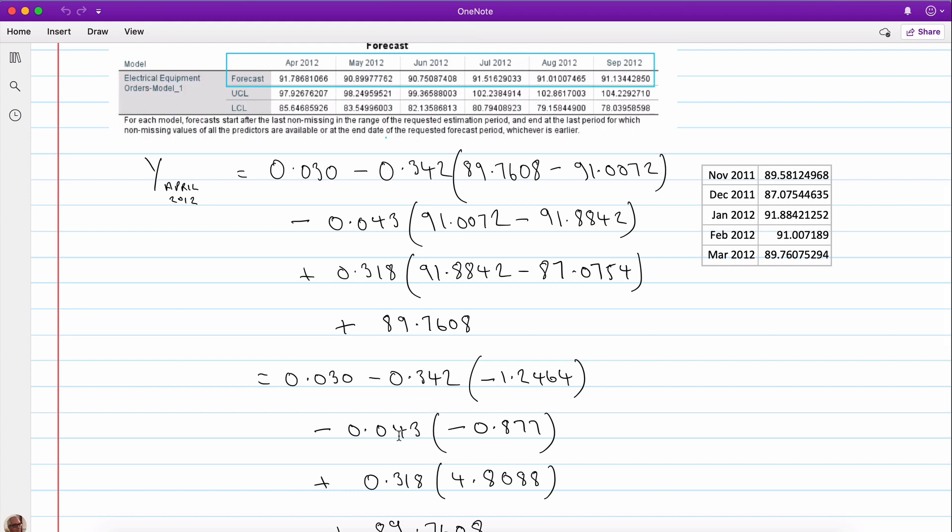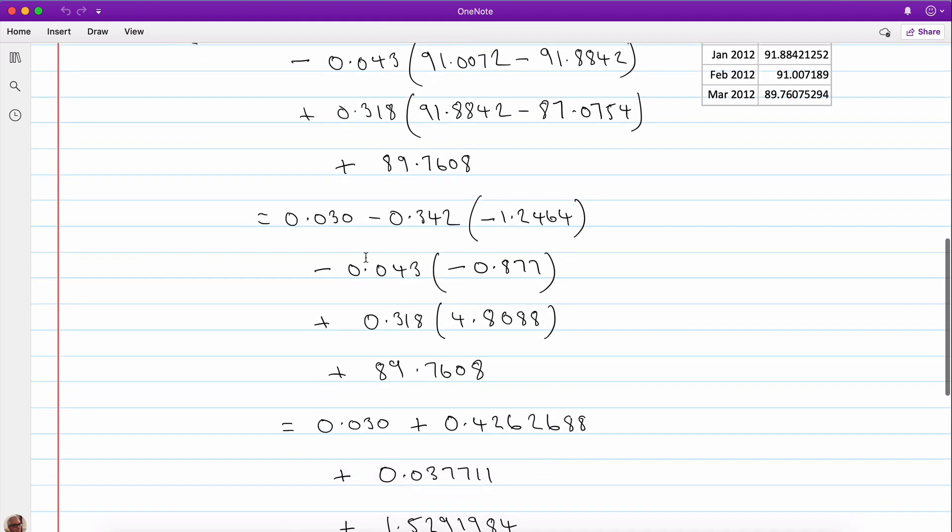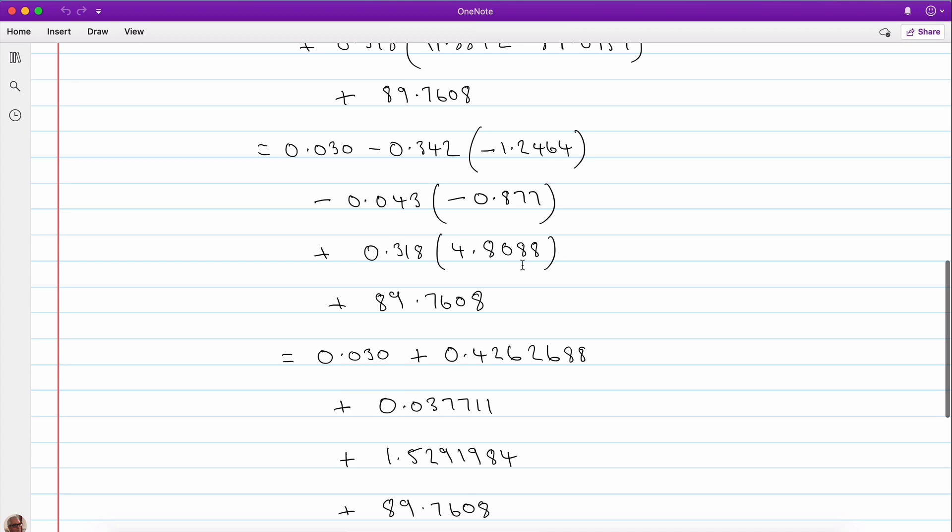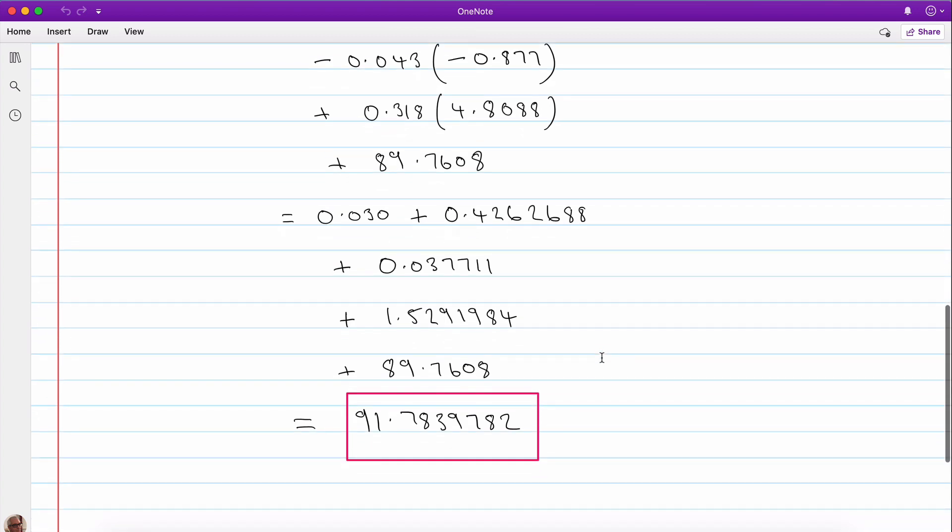That it comes to minus 1.2464, this one is minus 0.887, this one here is 4.8088. They are then multiplied by the appropriate coefficients. So we've got 0.030. Now of course minus times minus is a plus, so that means plus 0.342 times 1.2464 is equal to this. Again minus times a minus, so that's plus those two multiplied together, plus this.